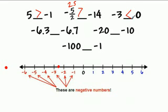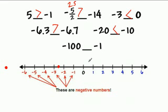Negative three and zero — zero is larger. Negative six point three and negative six point seven — negative six point three is larger. Negative twenty and negative ten — negative ten is larger. Negative a hundred and negative one — negative one is larger.